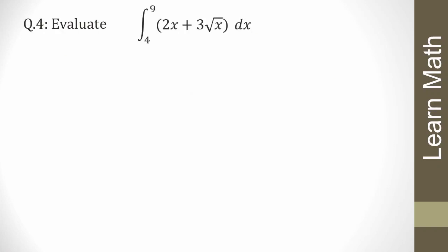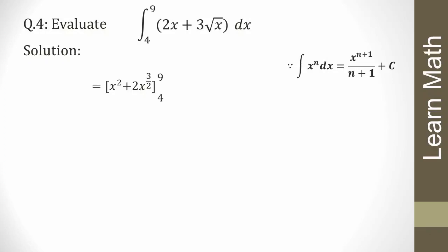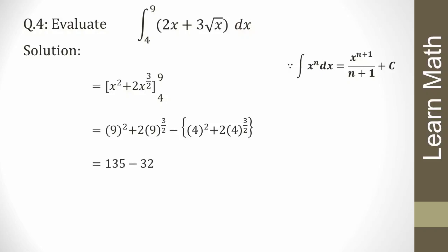The next question: evaluate the definite integral from 4 to 9 of (2x + 3√x) dx. By using the power rule xⁿ dx = x^(n+1)/(n+1) + c, we get [x² + 2x^(3/2)] from 4 to 9. Putting in the limits: (9² + 2·9^(3/2)) − (4² + 2·4^(3/2)). After simplifying we get 135 − 32 = 103.